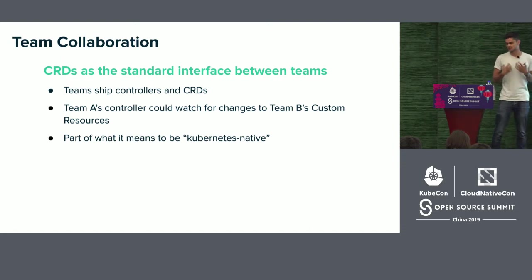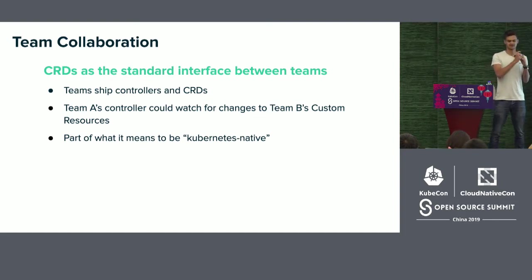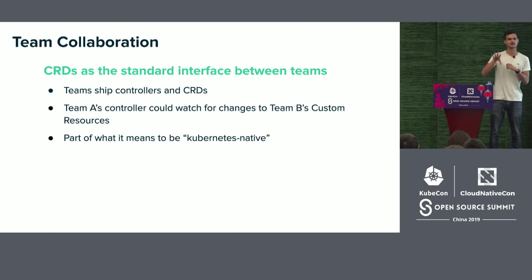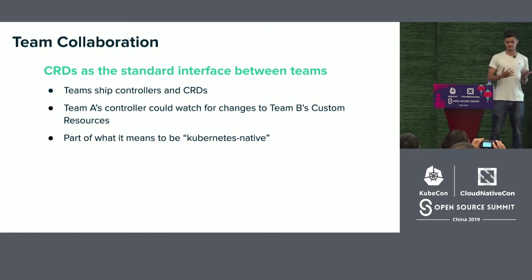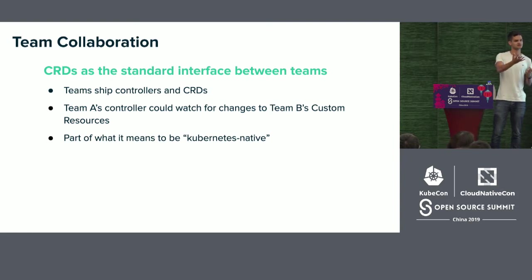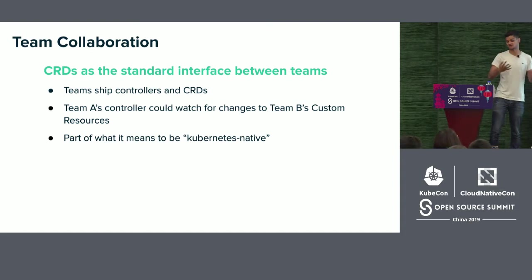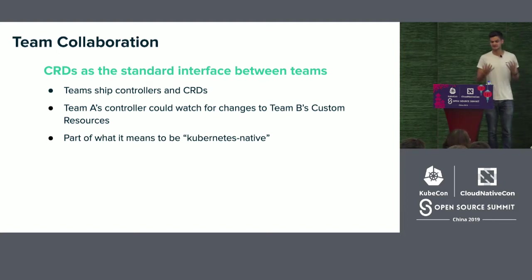Particularly interesting for us is that we want to collaborate the way the Kubernetes community collaborates — we want CRDs to be the standard interface between our teams. In the microservices example, each team had to define their own API, with company standards and a service discovery system. In Kubernetes, the CRD is the interface between teams and what CRDs are available in the cluster is the discovery mechanism. This leads to interesting collaboration patterns where different teams are responsible for different CRDs, and independently another team can monitor status and extend functionality — allowing real loose coupling between teams.